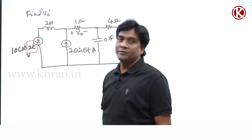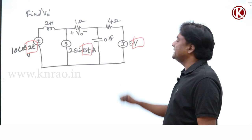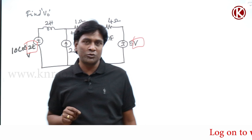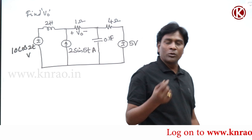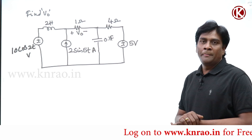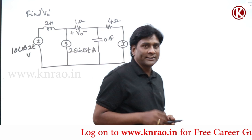Superposition theorem is the only way to solve this question because we have different frequencies: cos 2t, sine 5t, and zero frequency (DC). Under this condition, only superposition can give you the solution. Right after this, we are going to take one more problem to compare with Milliman's theorem or Thevenin's theorem.